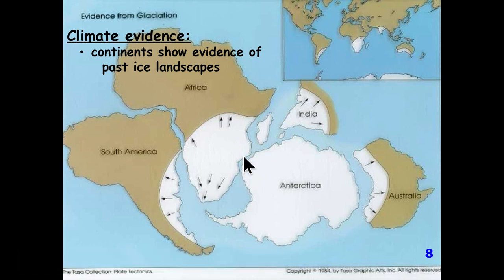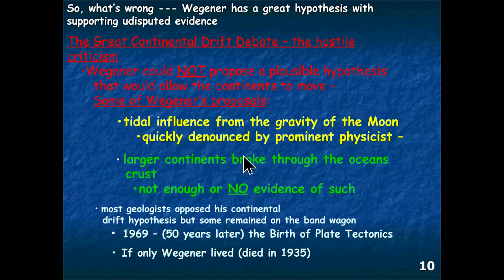So now we have climate evidence, fossil evidence, and lithologic rock correlations. At this point in the 1920s, Alfred Wegener was pretty excited about taking his evidence and submitting it to the science symposium to show that the continents are on the go—the continents are drifting. He went to the symposium, presented his evidence, talked about continental drift, and this became known as the Great Continental Drift Debate.